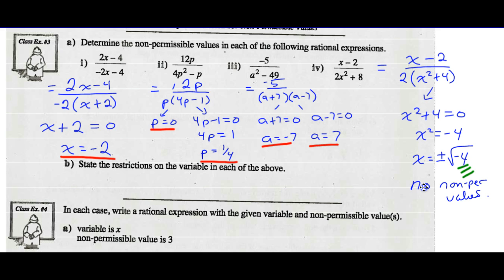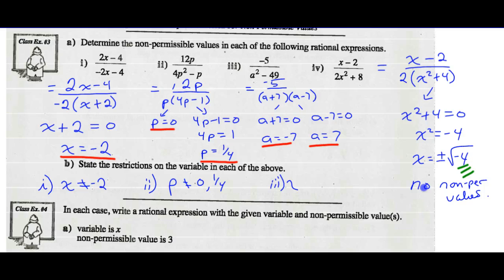Part B: state the restrictions of the variable in each of the above. For part 1, the restriction is x cannot equal negative 2. For part 2, the restriction is p cannot equal 0 or 1 quarter. For part 3, a cannot equal plus or minus 7.